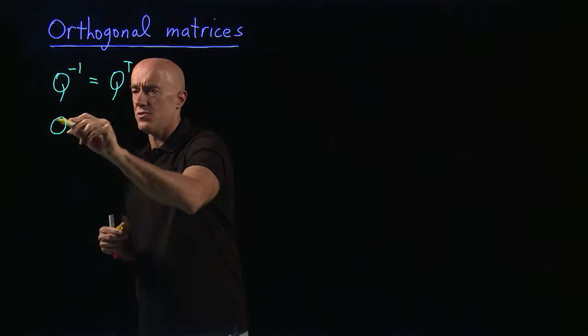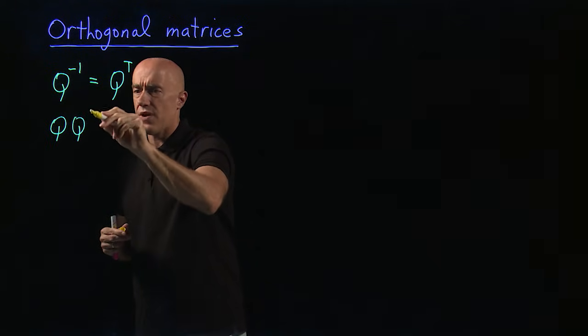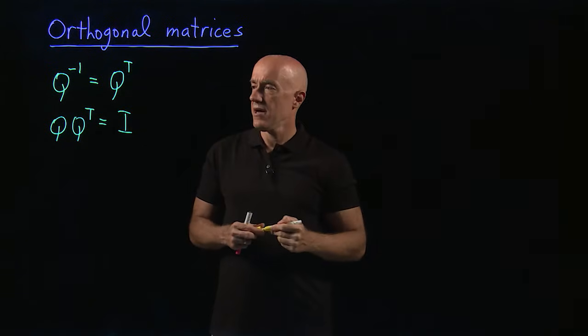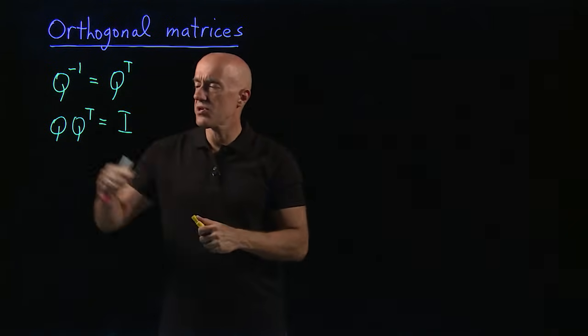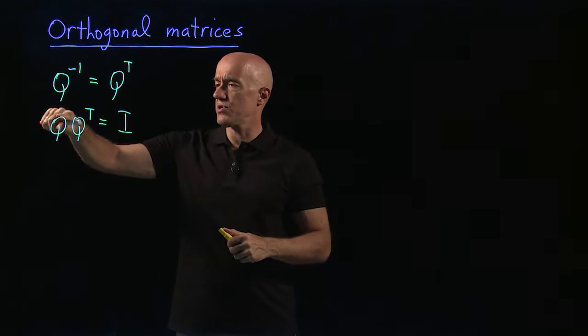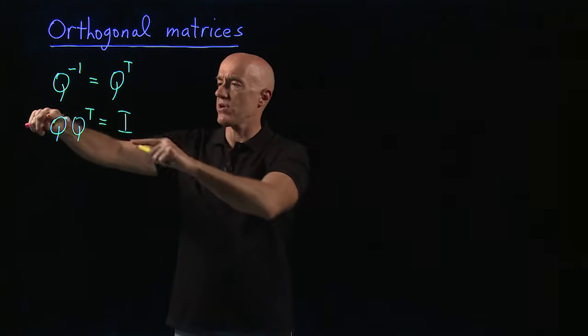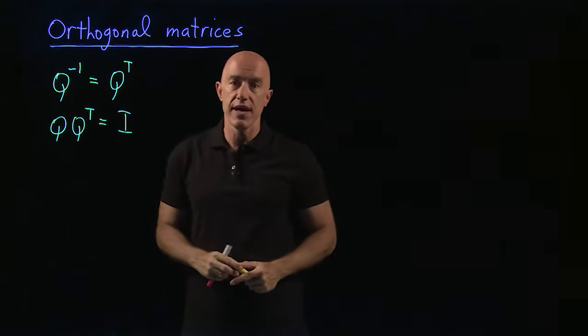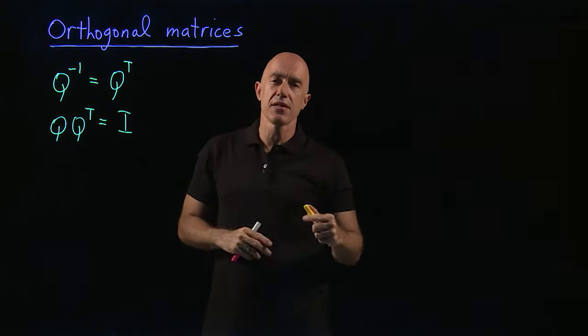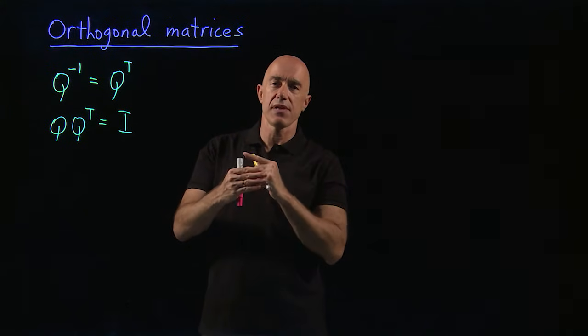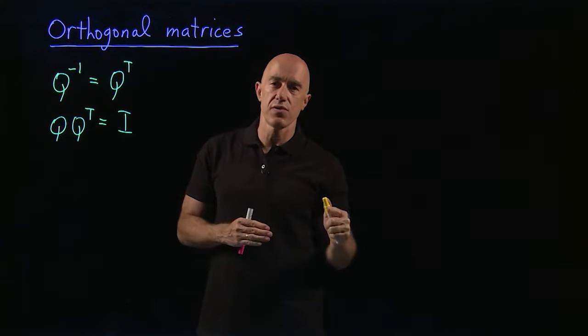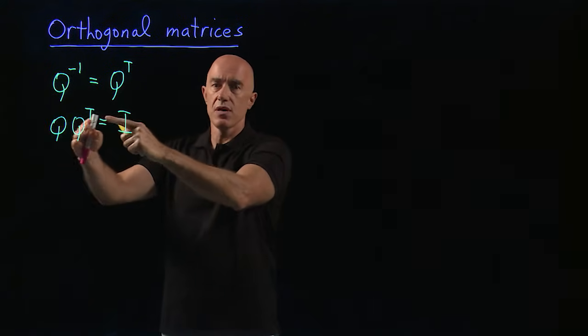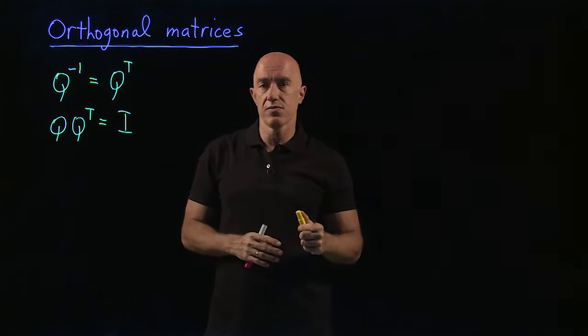That means that Q times Q transpose is equal to the identity matrix. So when we do Q times Q transpose, we're going across the row of Q down the column of Q transpose. But down the column of Q transpose is the same thing as going across the row of Q. So Q times Q transpose is like multiplying the row of Q against the row of Q.